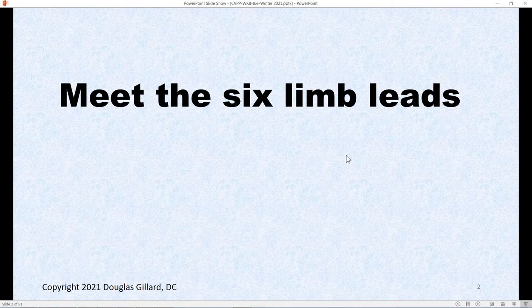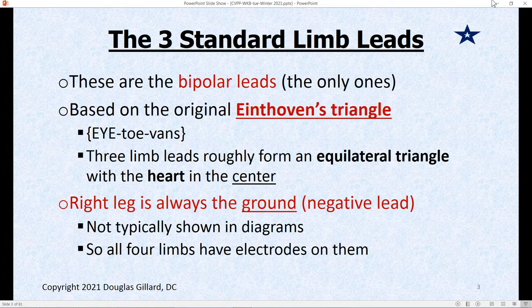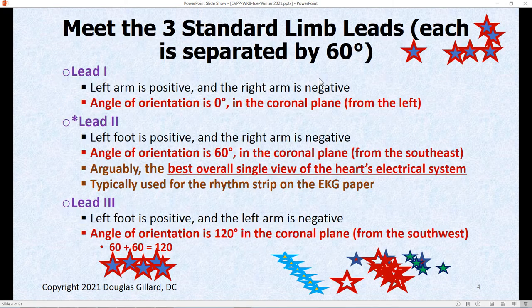So let's finish up. We just started talking about the physics of ECG and let's meet the six limb leads. We're just starting the leads now and these are important. There are three standard and three augmented leads — six limb leads total. The standard ones have been around forever. They're the ones used in first quarter physiology, based on Einthoven's triangle. Right leg is always the ground. Limb lead one has an angle of orientation of zero.